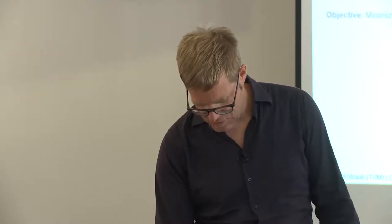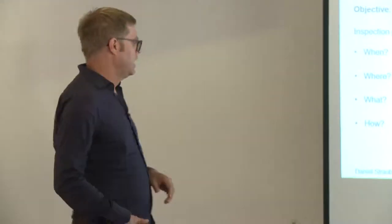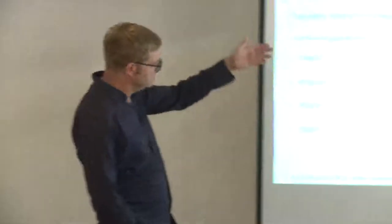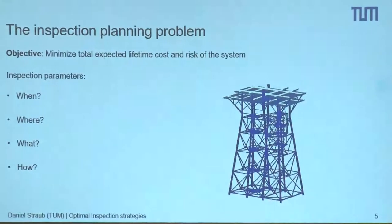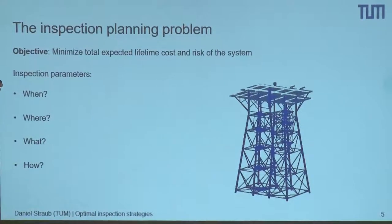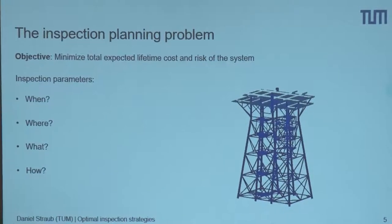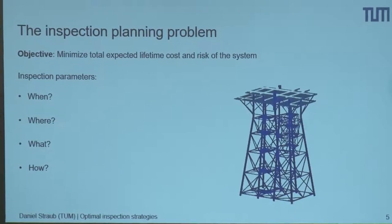I want to motivate what I call inspection planning — this is really what my PhD was about. The idea is that we want to minimize the life cycle cost of a system. The system is deteriorating and to manage deterioration we can do inspections. We have to decide on a number of parameters. I should credit my PhD supervisor Michael Faber: he said we have to figure out when to inspect, where to inspect, what to inspect, and how to inspect. Others have come up with exactly the same points. The 'when' is exactly this sequential problem: should we inspect in year two, year three, or every five years?